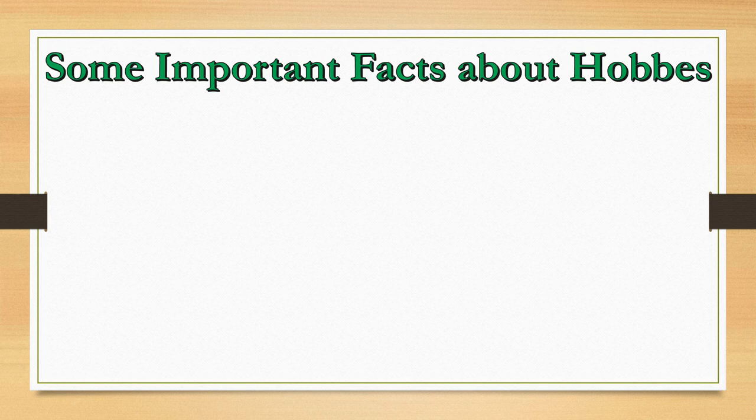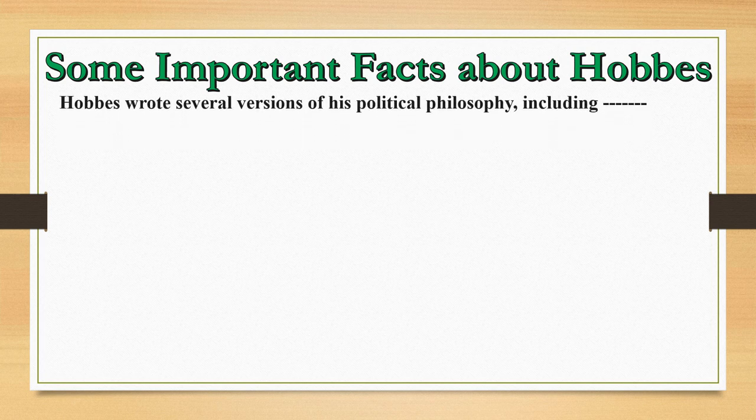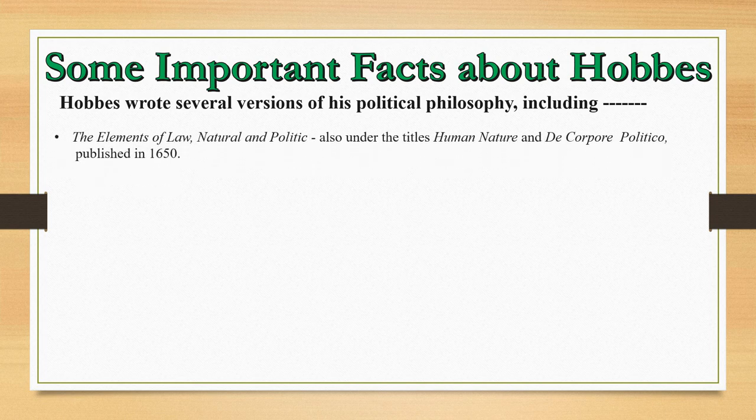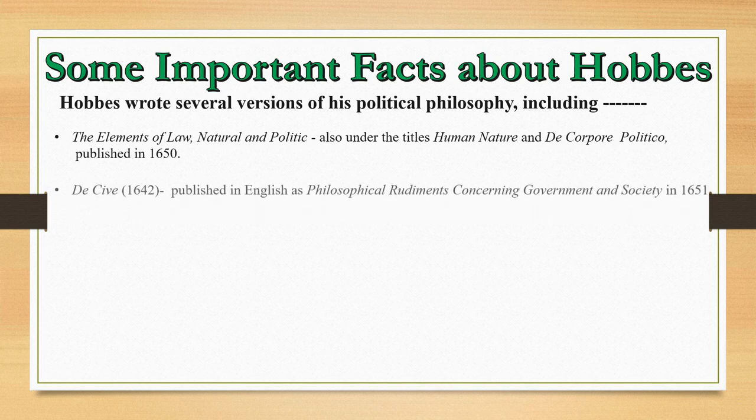Major works of political thinkers is one of the most important topics for UGC Net exam. Hobbes wrote several versions of his political philosophy, including the Elements of Law, Natural and Politic — also under the titles Human Nature and De Corpore Politico — published in 1650.